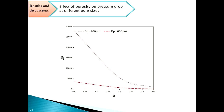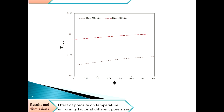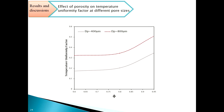Here is the effect of porosity on pressure drop at different pore sizes. As porosity increases, the pressure drop decreases rapidly for both pore sizes. Here is the effect of porosity on maximum temperature at different pore sizes — a slight increase in maximum temperature is seen as porosity increases. And for the temperature uniformity factor at different pore sizes, as porosity increases, the temperature uniformity factor increases for both pore sizes studied.